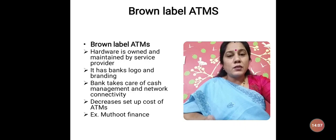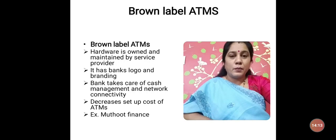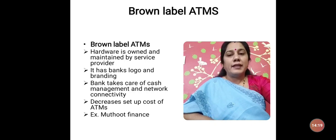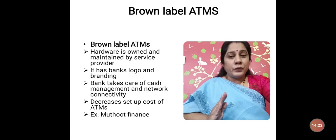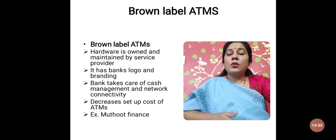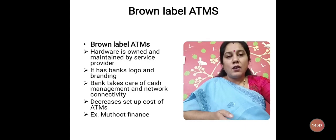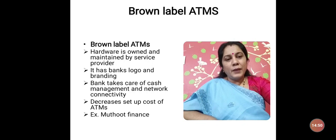The service provider earns a commission from the sponsor bank, and the bank benefits because its setup cost for ATMs is decreased. The logo and branding of the sponsor bank will be displayed on the brown label ATM. Examples of brown label ATMs include Muthoot Finance and IndyCash. So, both parties are benefited in brown label ATMs. There are different types of ATMs, which have become a part and parcel of every man's life. Thank you.